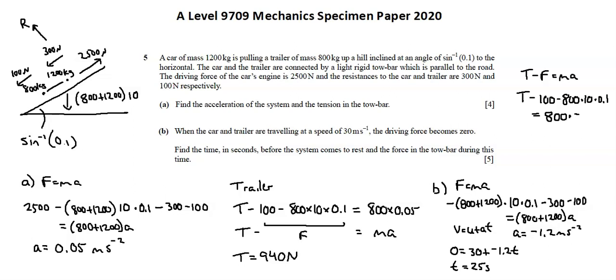we've just calculated the acceleration as negative 1.2. T equals negative 60 newtons which means that thrust not tension is in the bar. The thrust is 60 newtons. This completes the requirements for question 5.